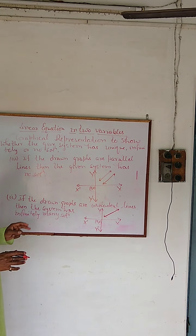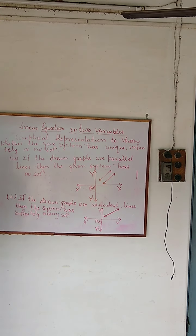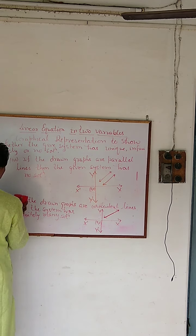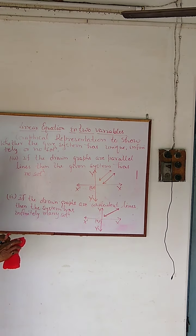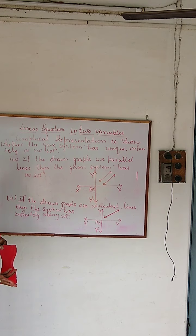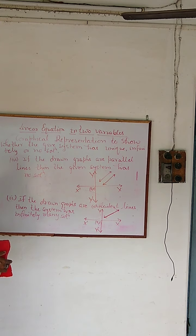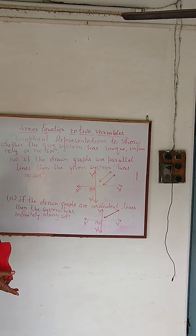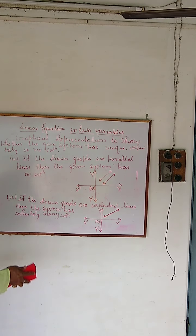So this time again, questions may be given where by drawing the graphs you find out whether the given system has a unique solution, infinitely many solutions, or no solution. The structure of the graph tells you which case applies.